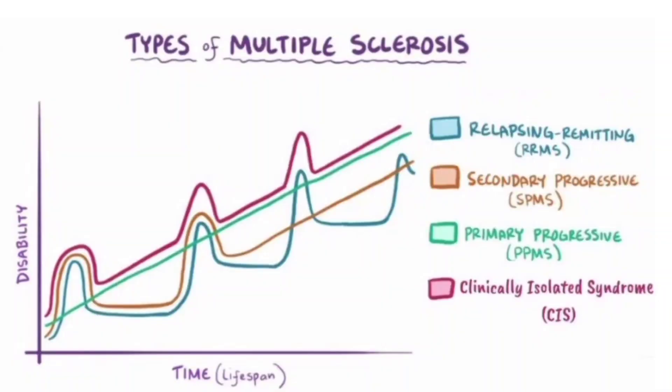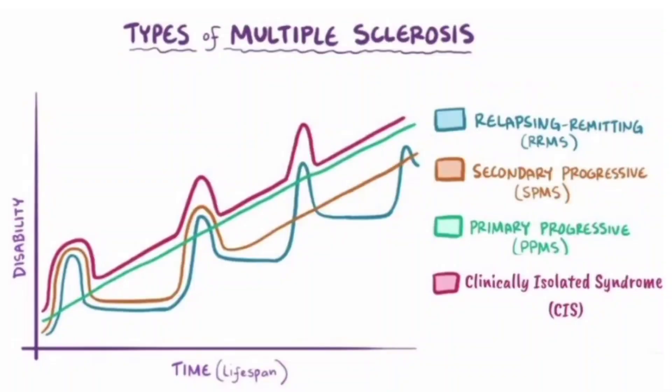The second and most common type is relapsing-remitting multiple sclerosis, or RRMS, which accounts for about 80% of multiple sclerosis cases. The symptoms deteriorate again and again with no new activity forming — it progresses in a step-like pattern of relapsing and remitting, with deteriorating symptoms but no new activity formed.